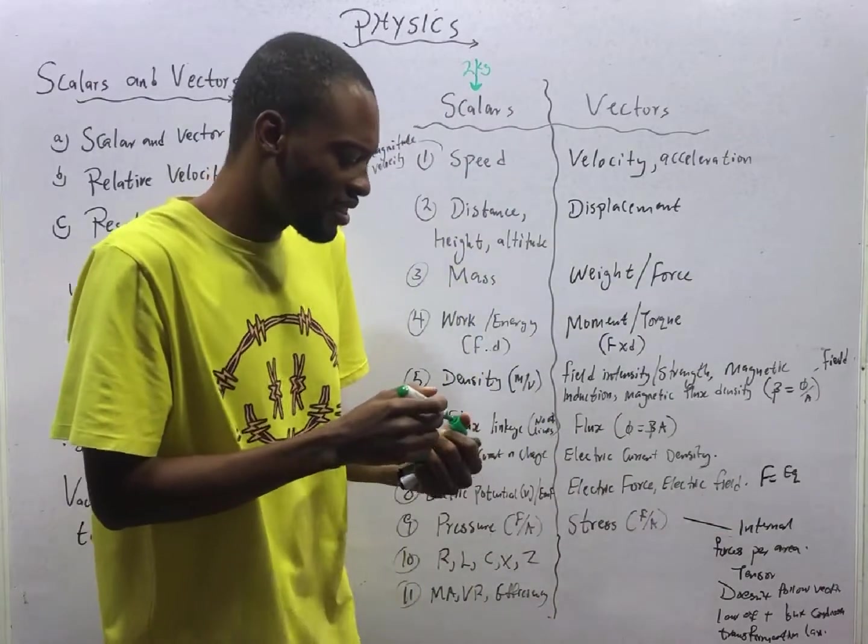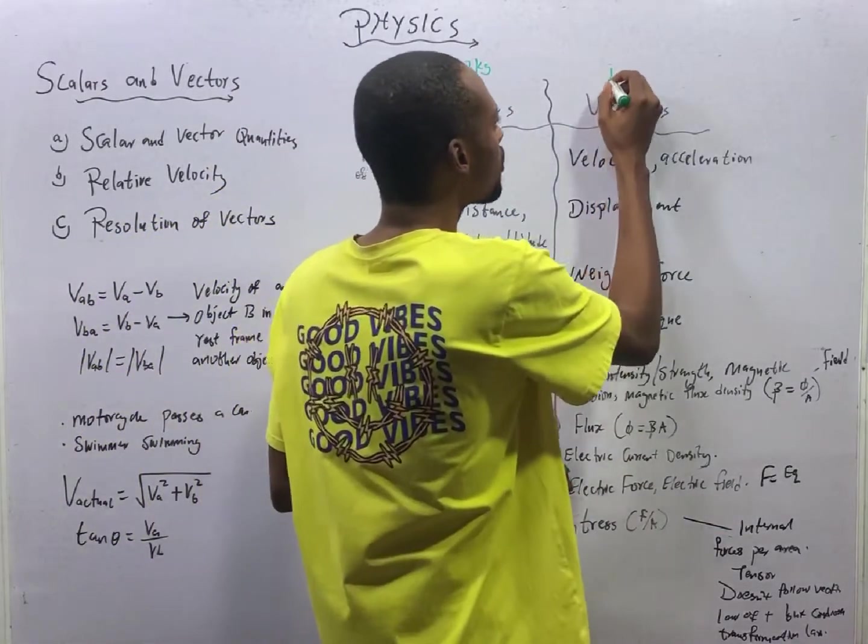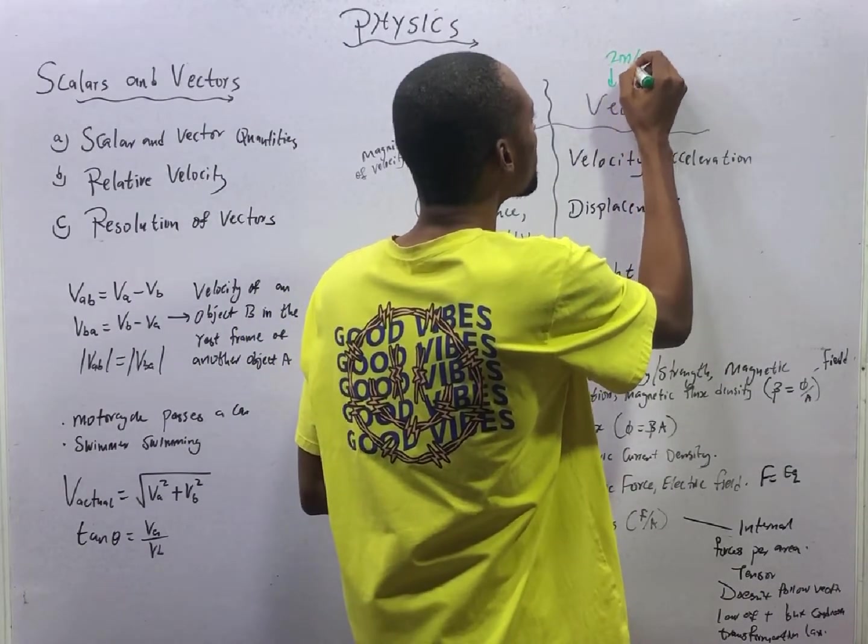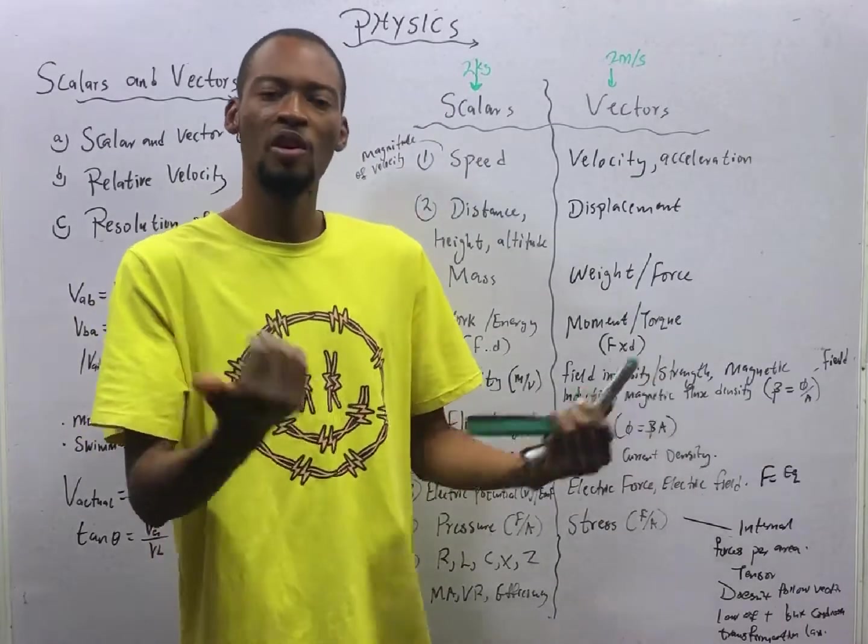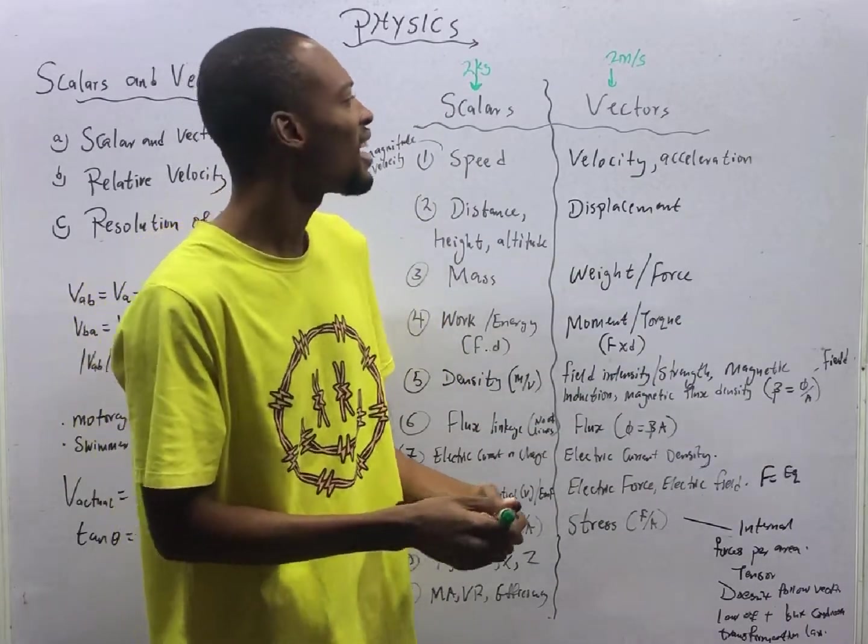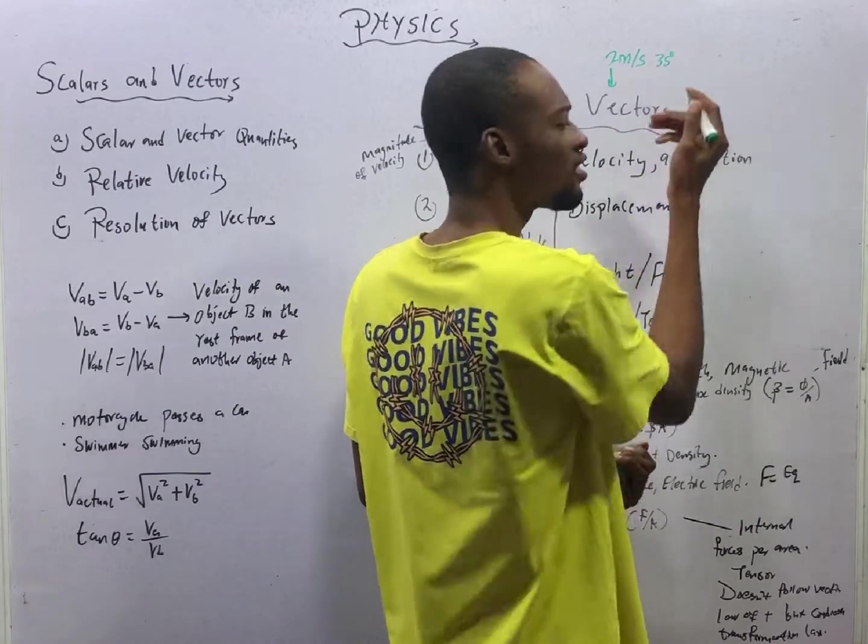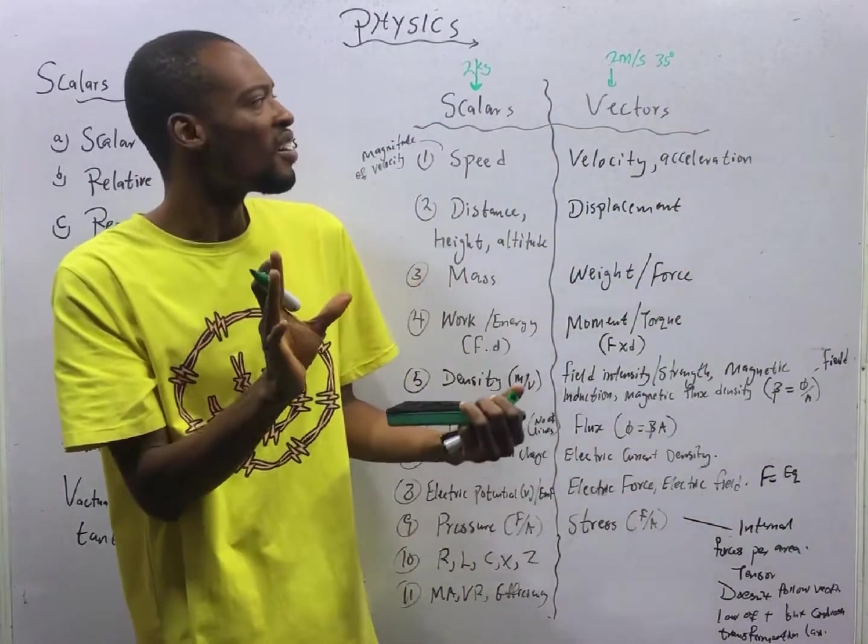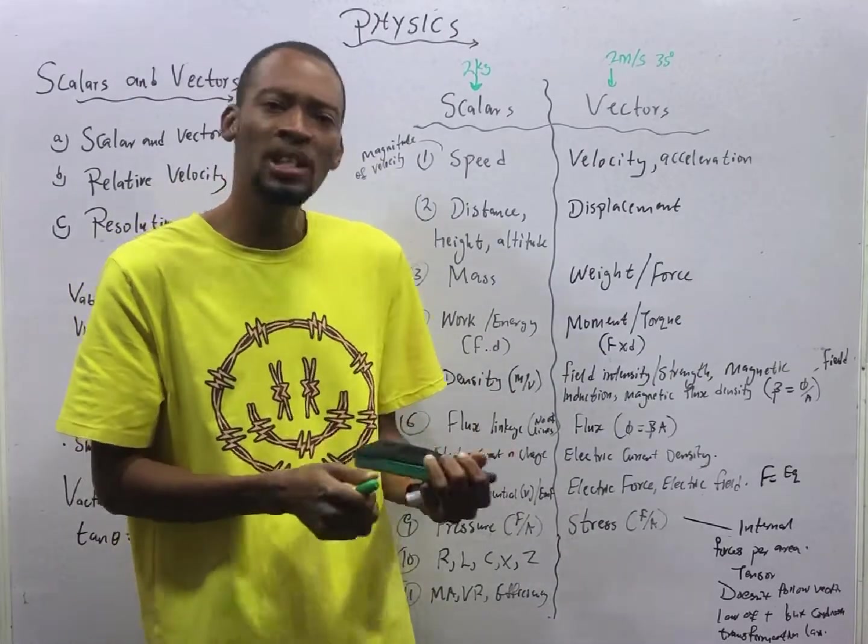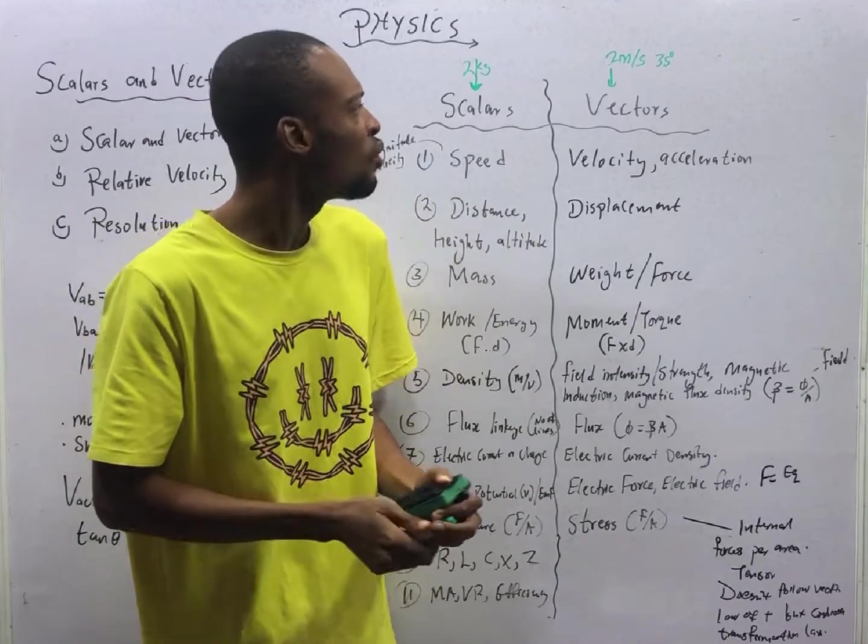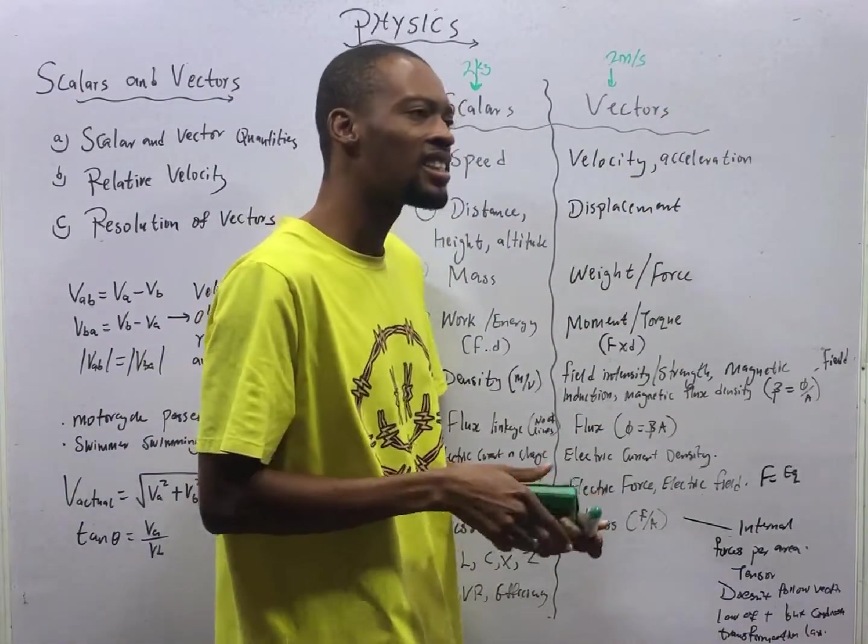How about a situation where I say the aeroplane moves with a velocity of 2 meters per second. If I add due east or due north or at 35 degrees east, that is a complete description. Since the aeroplane is moving at a velocity, we need to know the direction it is moving.